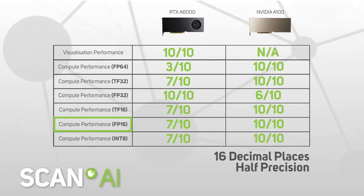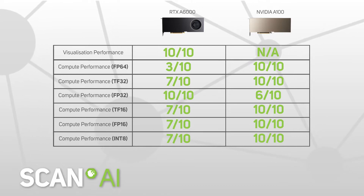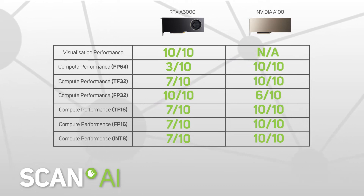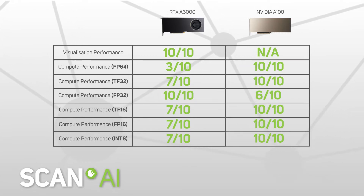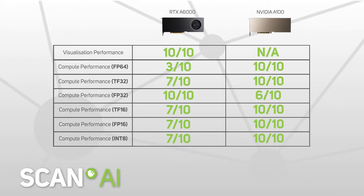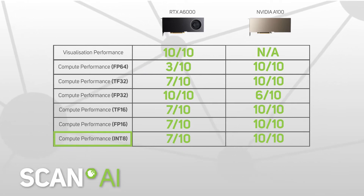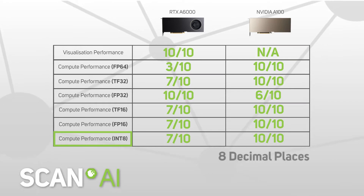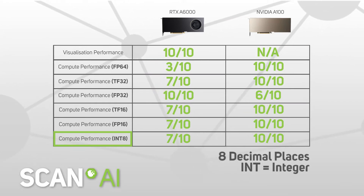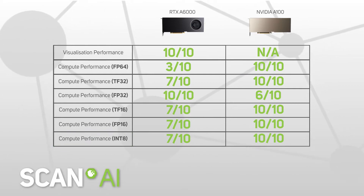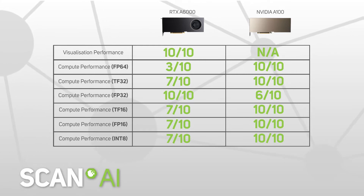The higher precision level a machine uses, the more computational resources, data transfer and memory storage it requires. It'll also cost more and consume more power. Once a model is trained and ready for inference — obtaining results from a new dataset — precision is often lowered, still to 8 or even 4 decimal places. This is referred to as INT8 or INT4, integer 8 or integer 4. Once you know a model gives accurate results, moving to a lower precision decreases power and GPU memory burden to deliver results faster.